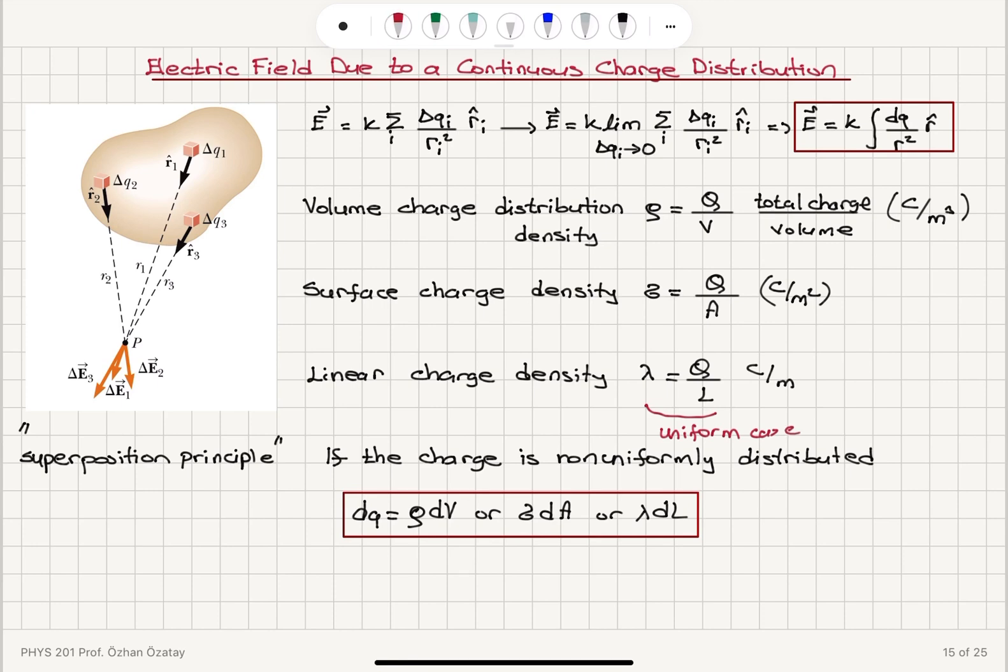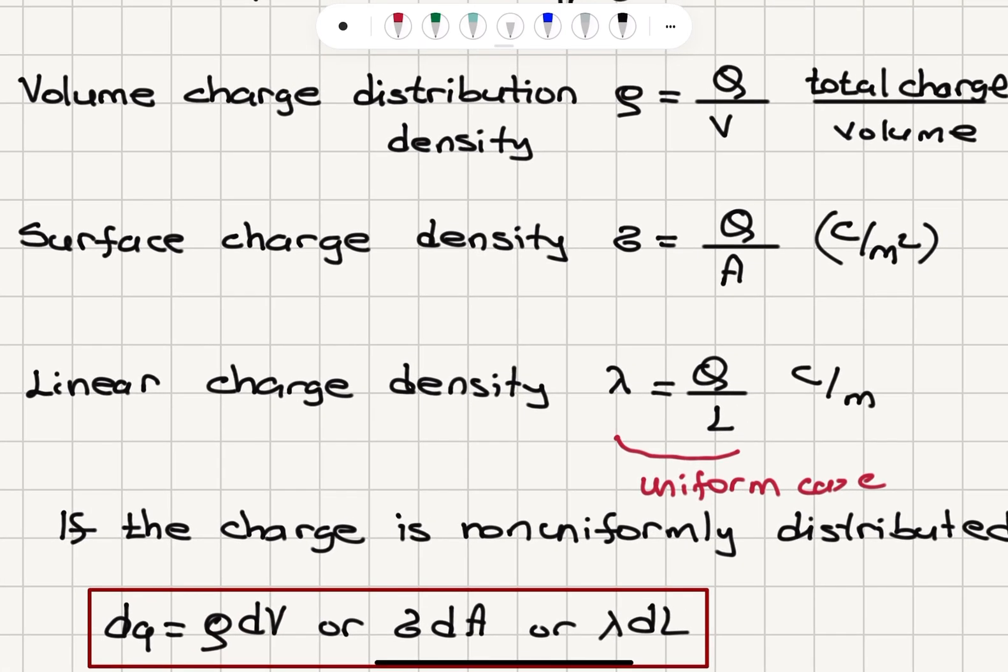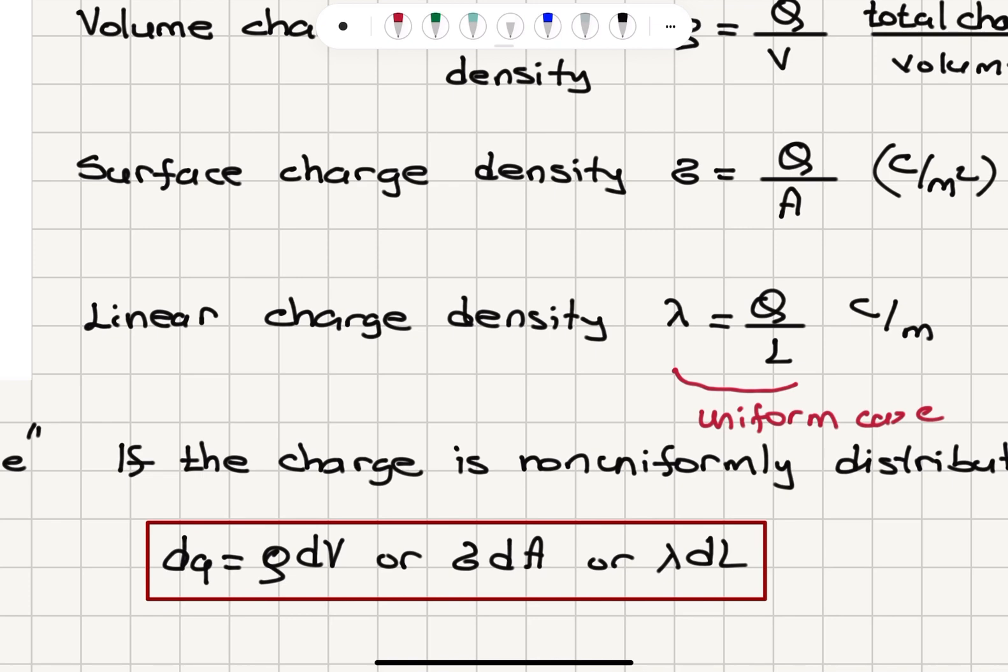Now, if the charge is non-uniformly distributed, then I can calculate DQ as rho DV. So rho would be, instead of being Q over V, DQ DV, sigma would be DQ DA, and lambda would be DQ DL.